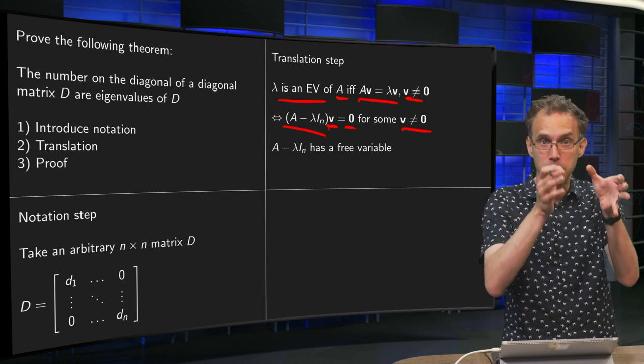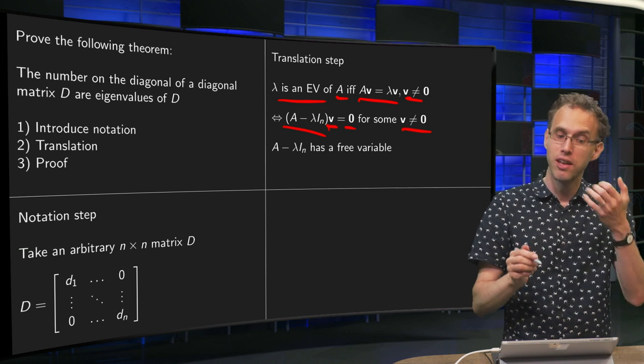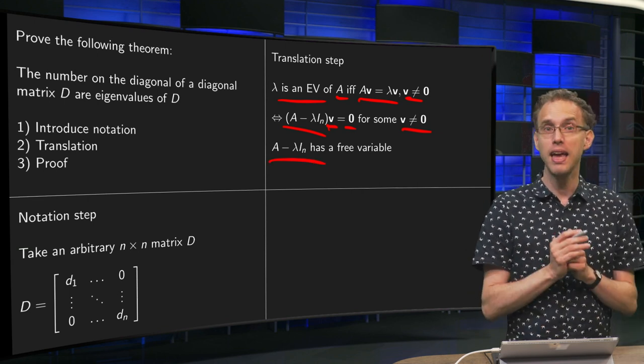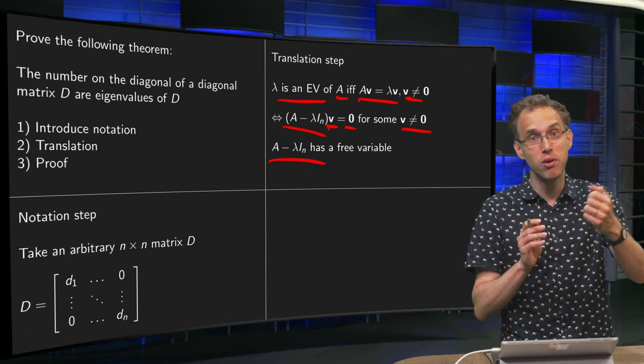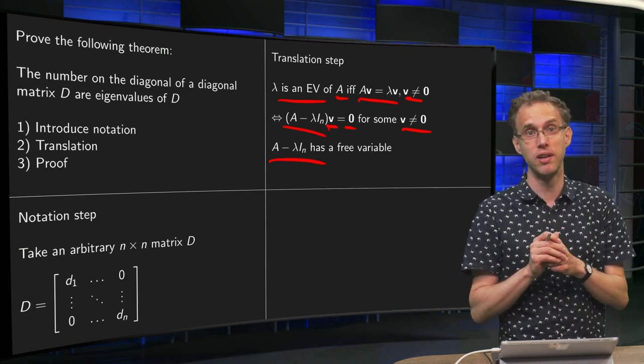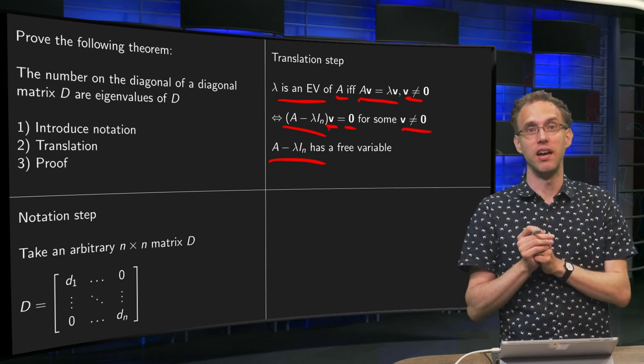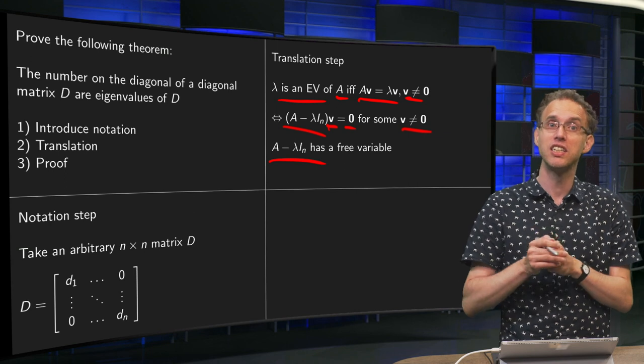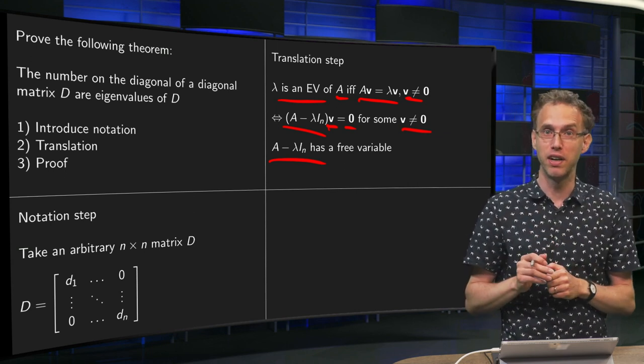A minus λIₙ times vector has a non-trivial solution, so that means that the matrix A minus λIₙ needs to have a free variable, because otherwise you would only have the trivial solution. That's the translation step. If λ is an eigenvalue of the matrix, then that means that A minus λ times Iₙ has a free variable.